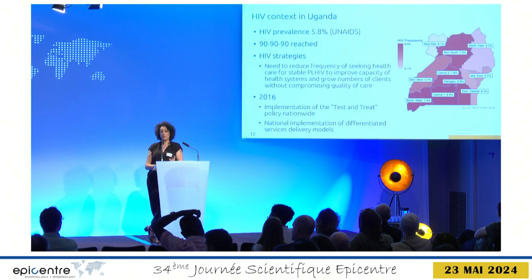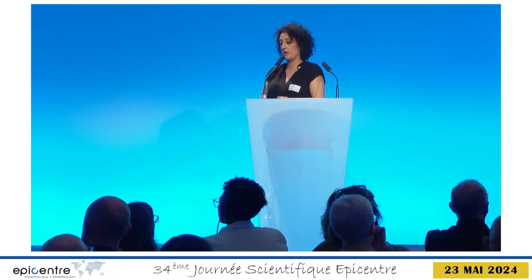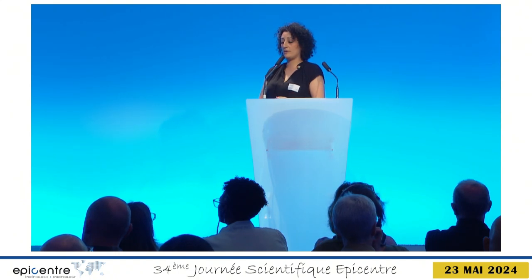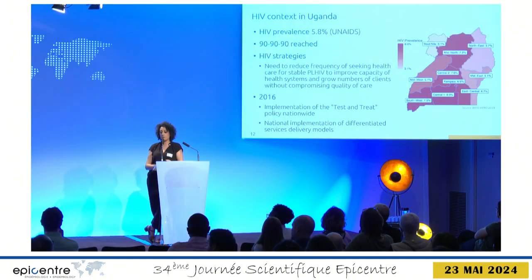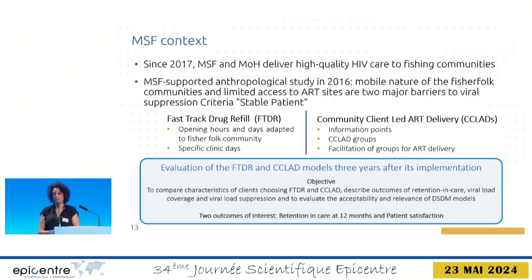Now let's turn to Kasese in Uganda, in the western part of the country. The burden of disease is higher there — 5.8%, close to 6%, of people live with HIV. However, Uganda quickly reached the 90-90-90 cascade, the UNAIDS objectives. They rolled out test-and-treat in 2016 and also differentiated service delivery models, reducing frequency of consultations and prioritizing those most in need.